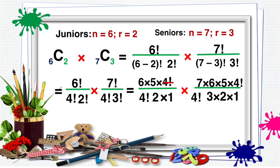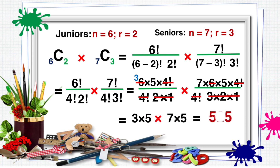Cross out 4 factorial, then divide 6 and 2, that is 3. Cross out the other 4 factorial, then divide 6 by 3 times 2. The remaining numbers are 3 times 5 and 7 times 5, and that is equal to 525.